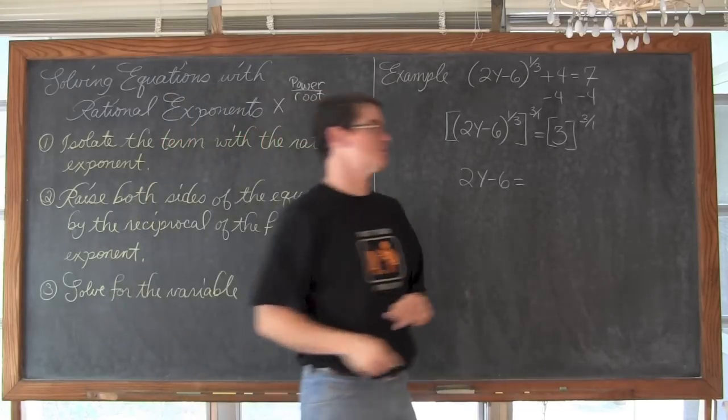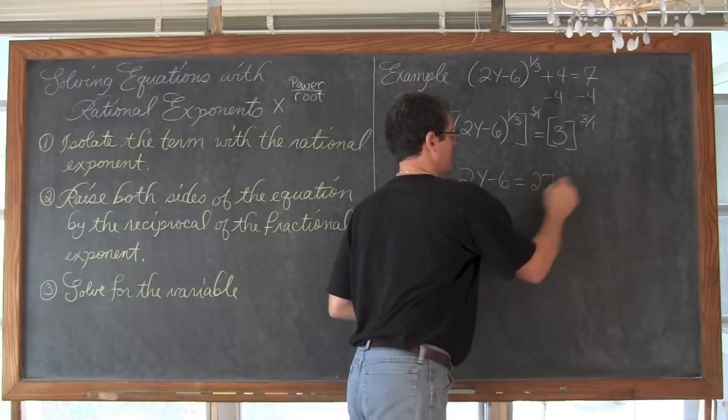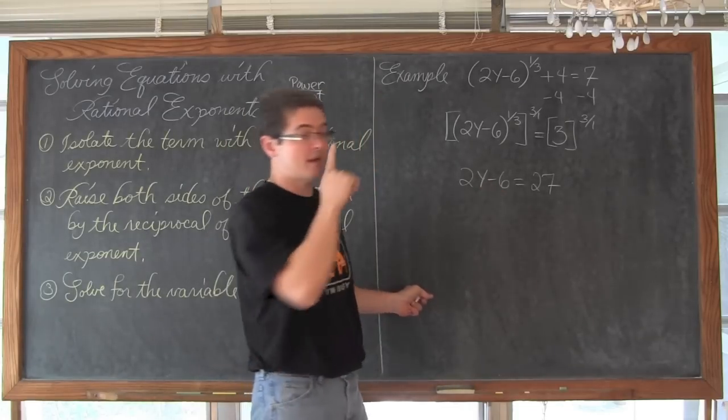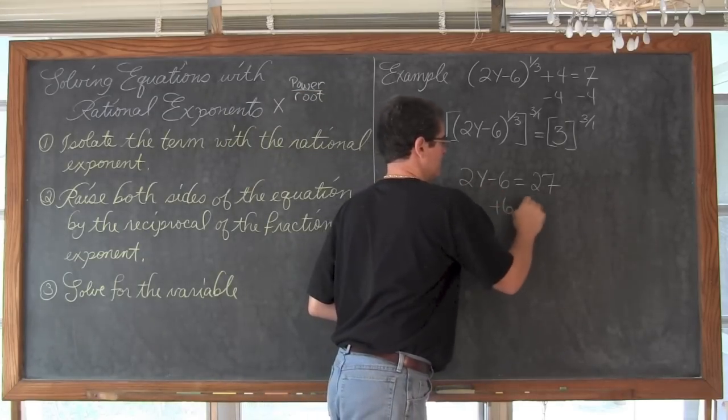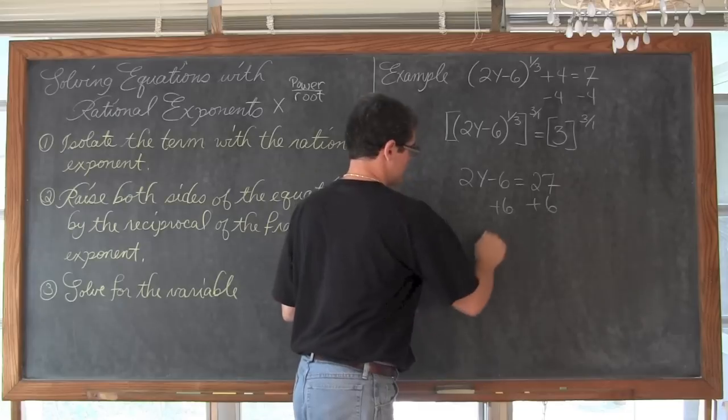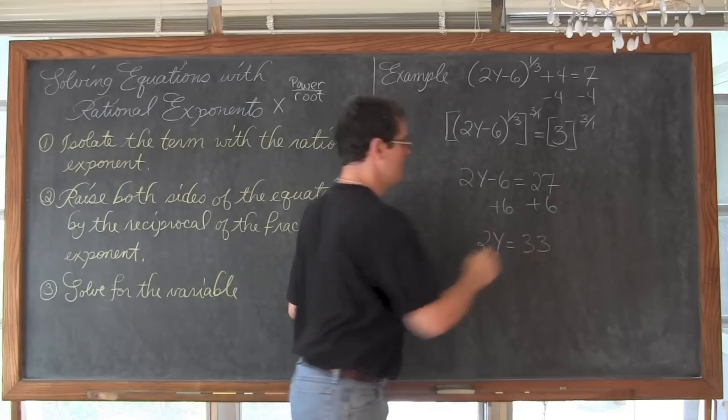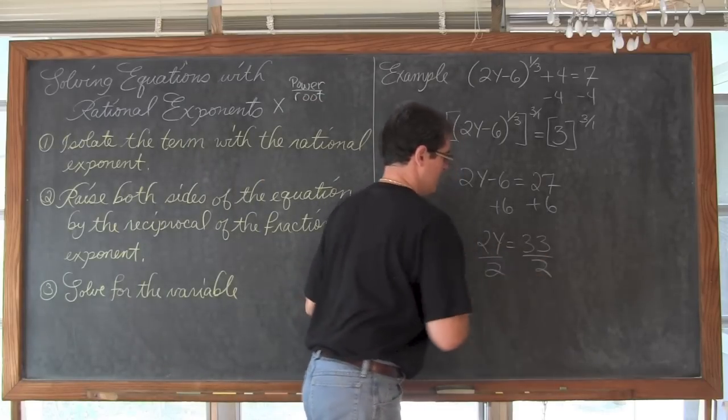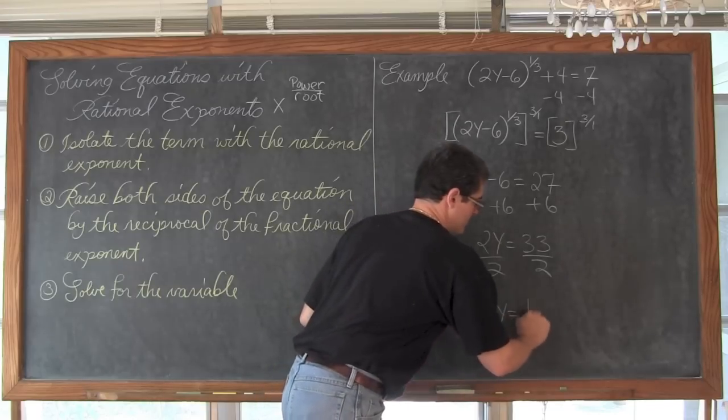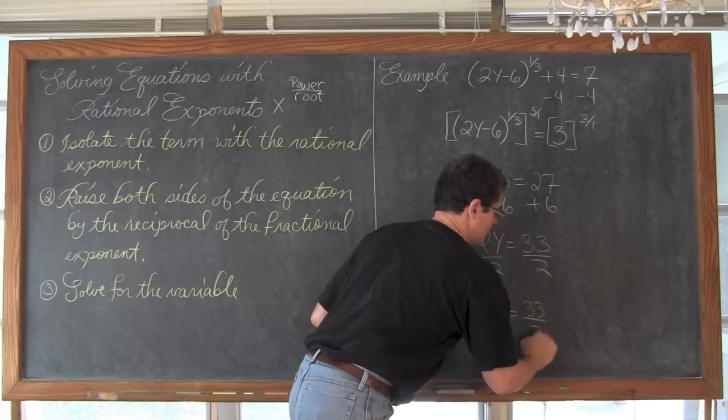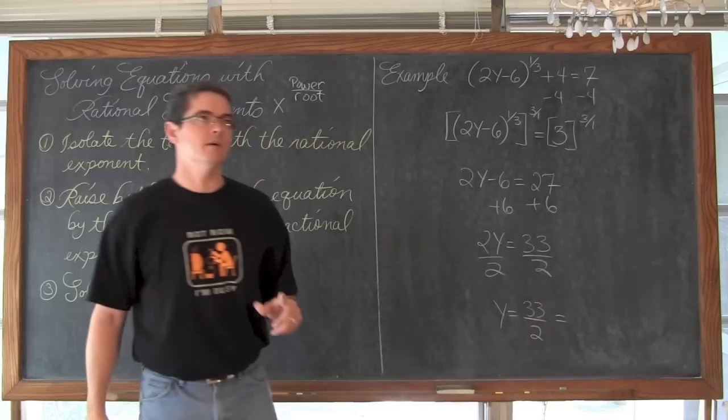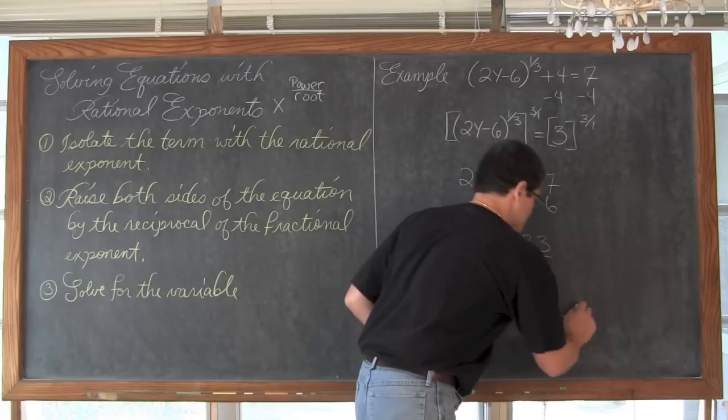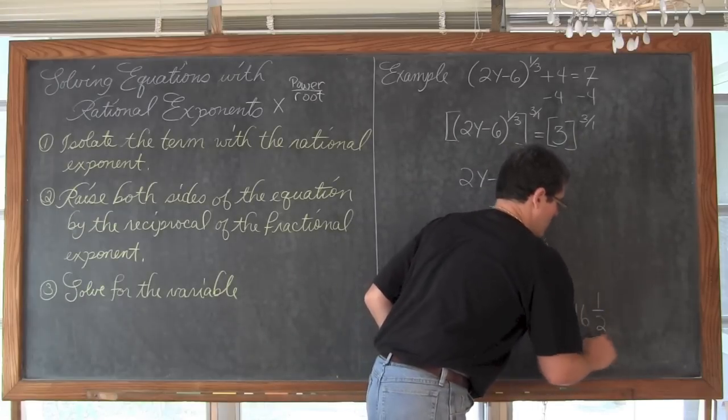So we are just going to write 2y-6 is equal to 3 to the 3rd power. 3 times 3 is 9 times 3 is 27. We are going to do the opposite of subtraction. We are going to add both sides by 6. And get 2y is equal to 33. Divide both sides by 2. And y is equal to 33 over 2. Or let's see here. 32 divided by 2, that would be 16. So it could be equal to 16 and 1 half.